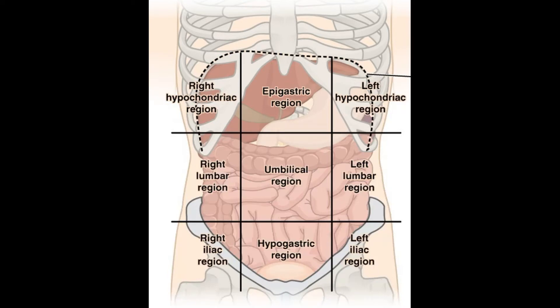Once again, the middle ones: epigastric, umbilical, hypogastric. Then right and left hypochondriac, right and left lumbar, and then right and left iliac.